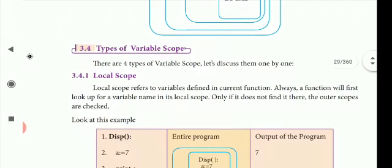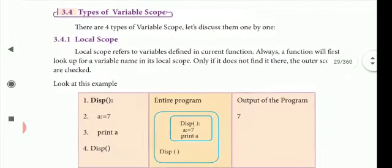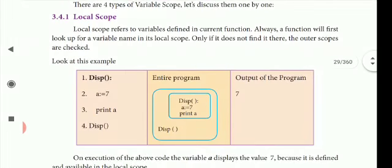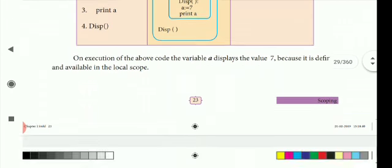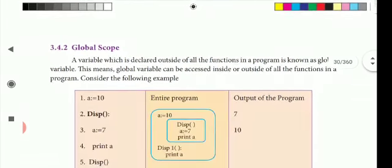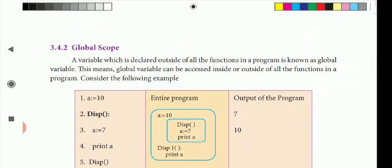Local scope refers to the variables defined in the current function. It is a local scope. There are four types of scopes. First is local scope and second is global scope.